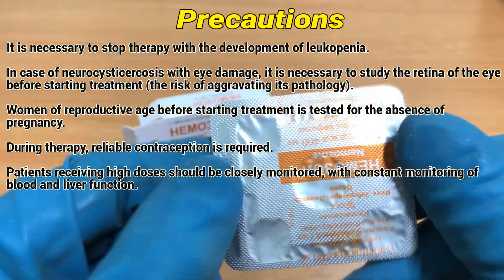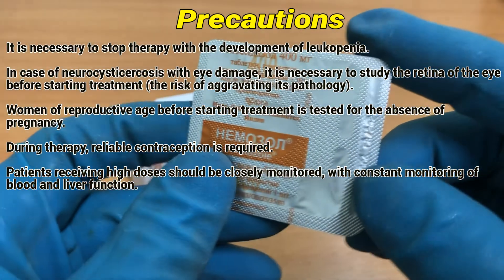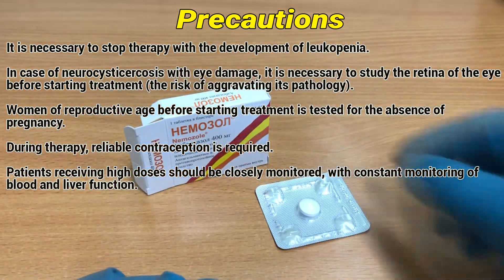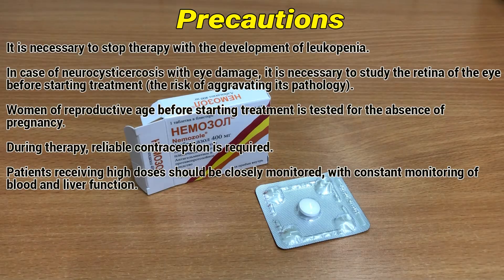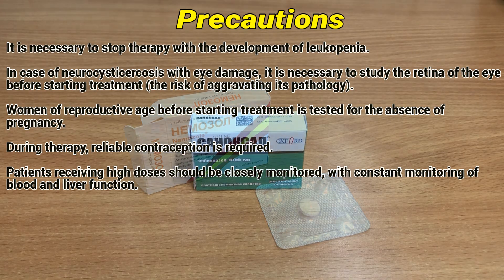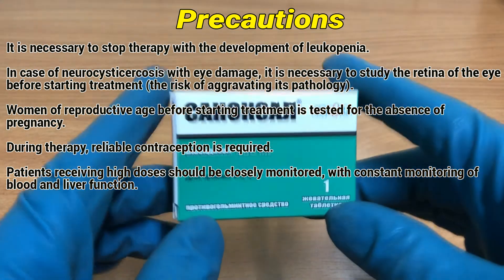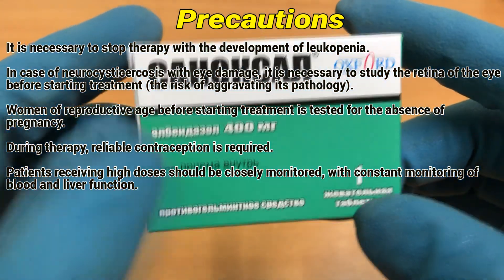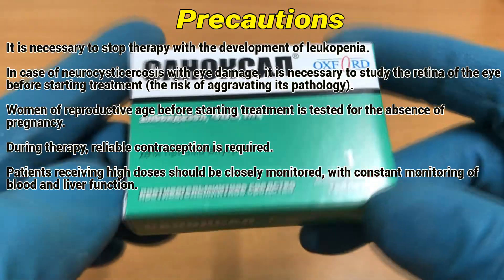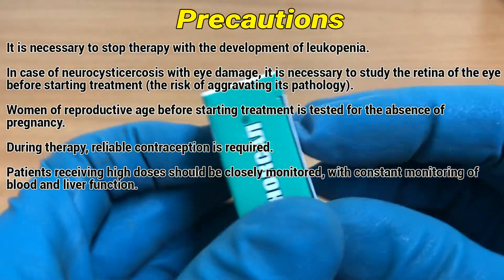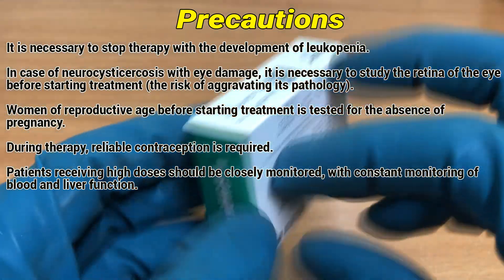Precautions: It is necessary to stop therapy with the development of leukopenia. In the case of neurocysticercosis with eye damage, it is necessary to examine the retina of the eye before starting treatment due to the risk of aggravating its pathology. Women of reproductive age should confirm the absence of pregnancy before starting treatment. During therapy, reliable contraception is required. Patients receiving high doses should be closely monitored with constant monitoring of blood and liver function.